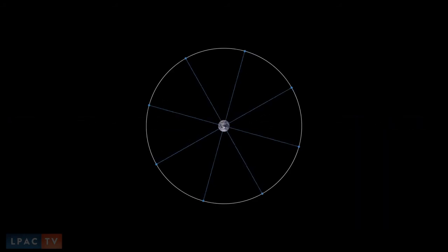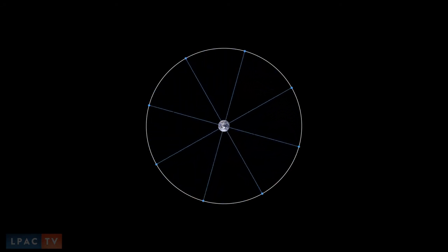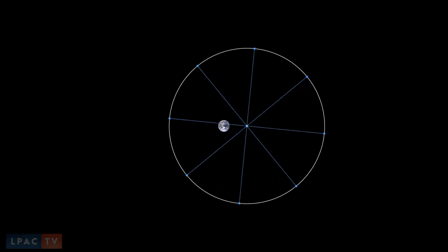So to account for the different speeds in different parts of the orbit, Ptolemy first tried moving the deferent off-center from the Earth. That way, the part of the orbit near the Earth would appear faster to us watching.